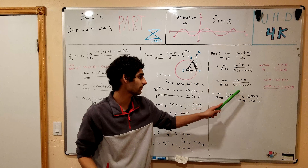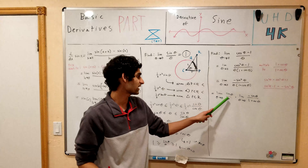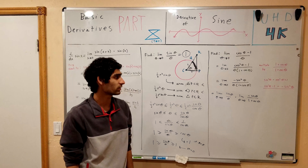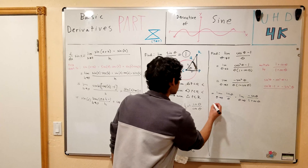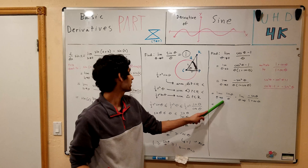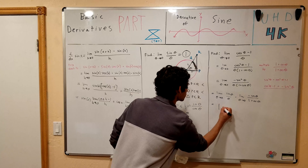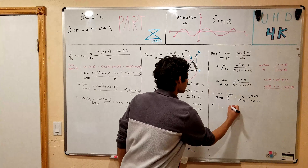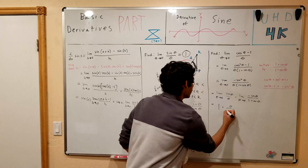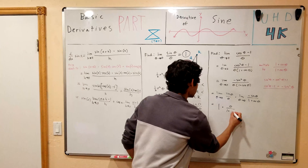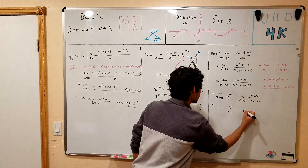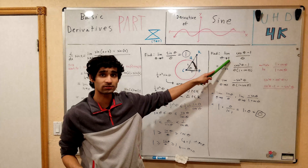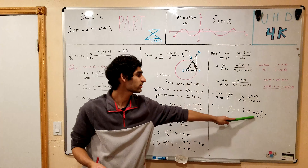Multiplying sine theta over theta by negative sine theta over (1 plus cosine theta) gives us back negative sine squared theta over theta times (1 plus cosine theta). Now evaluating: the first limit, sine theta over theta, we already found equals 1. For the second limit, sine of 0 is 0 and cosine of 0 is 1, so it equals negative 0 over (1 plus 1), which is 0. Therefore the limit as theta goes to 0 of cosine theta minus 1 over theta equals 0.